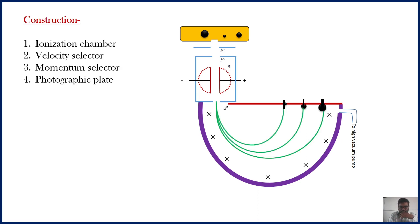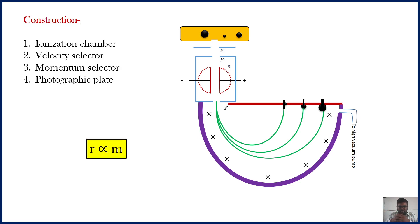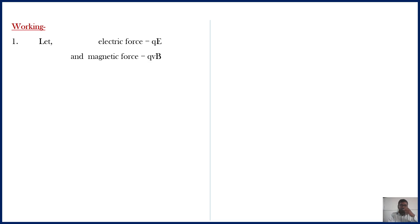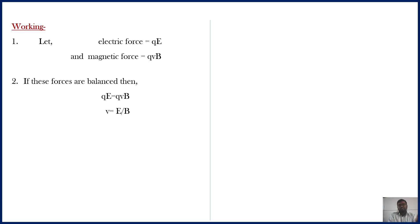Now let us see the working of the Bainbridge mass spectrograph. The radius of the circular path is proportional to the mass, as we have already seen in the animation. We know that the electric force is given as Q into E, where Q stands for the charge of the ion and E stands for the magnitude of the electric field, and the magnetic force is given as QVB. If these two forces are balanced, then we can write QE equals QVB, so velocity V equals E upon B. This has already been discussed in the previous videos in the case of the velocity selector. So the ions having velocity V will pass without deflection.